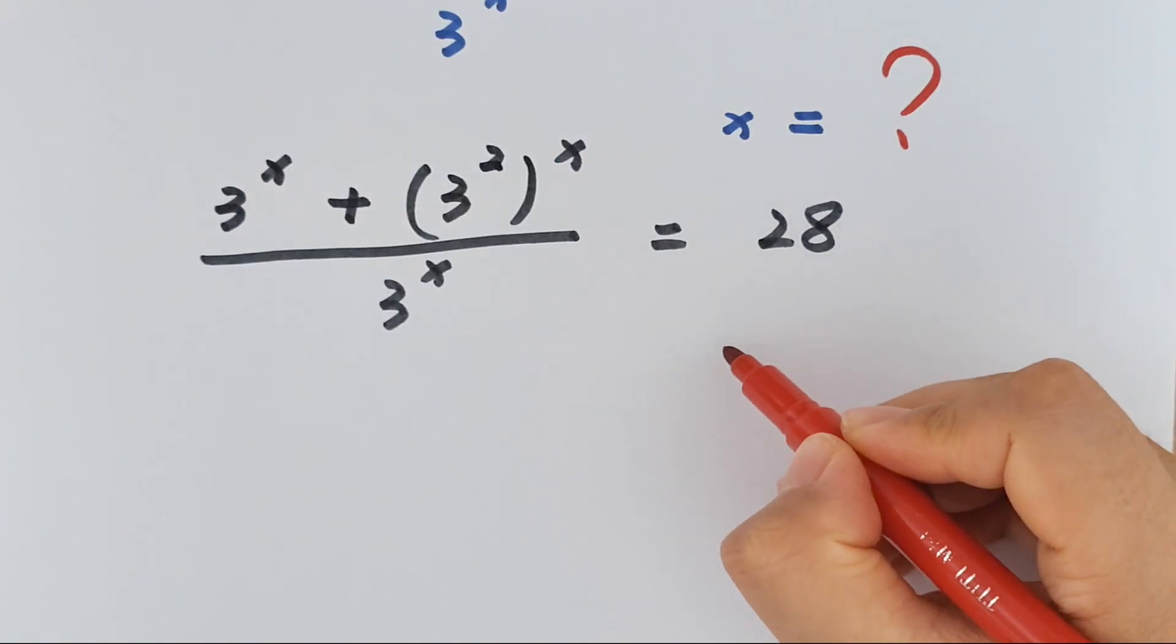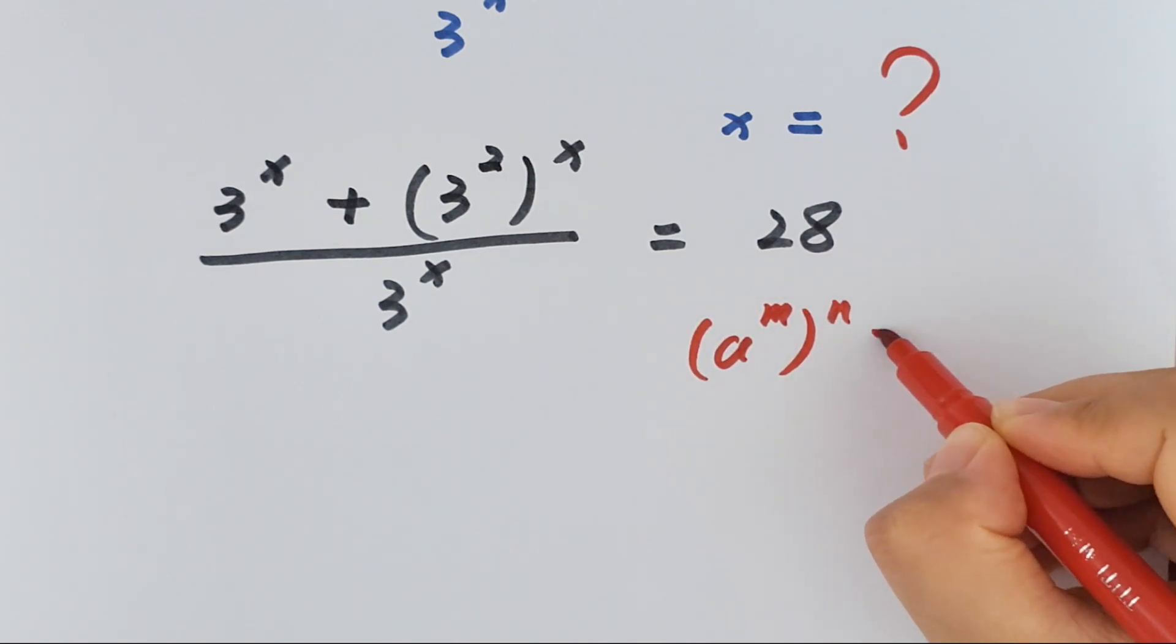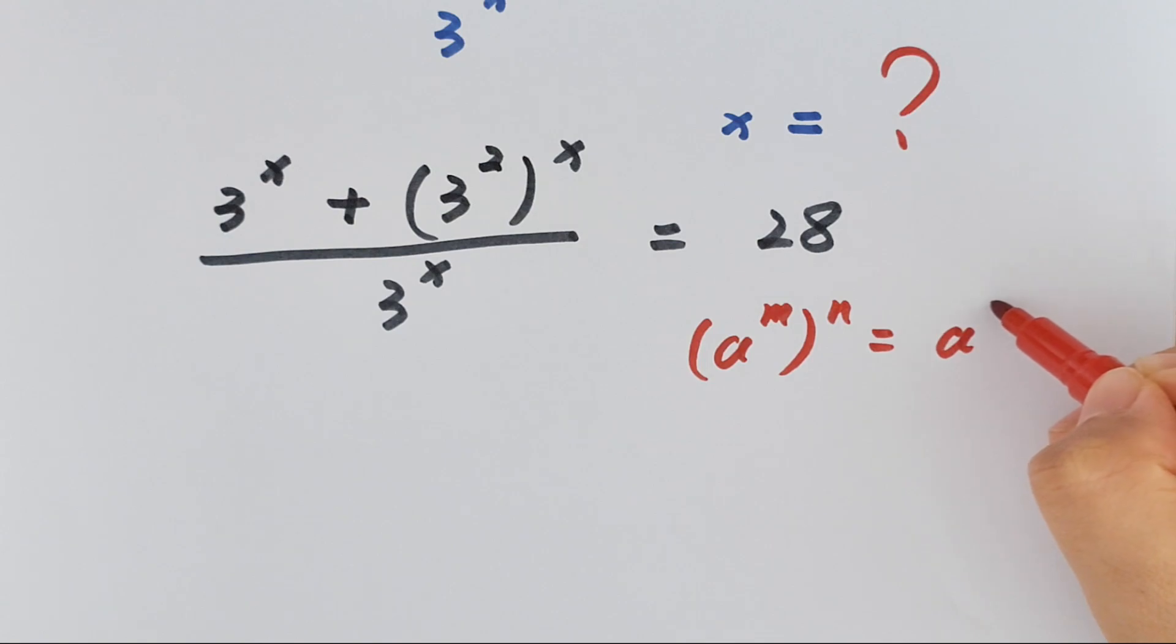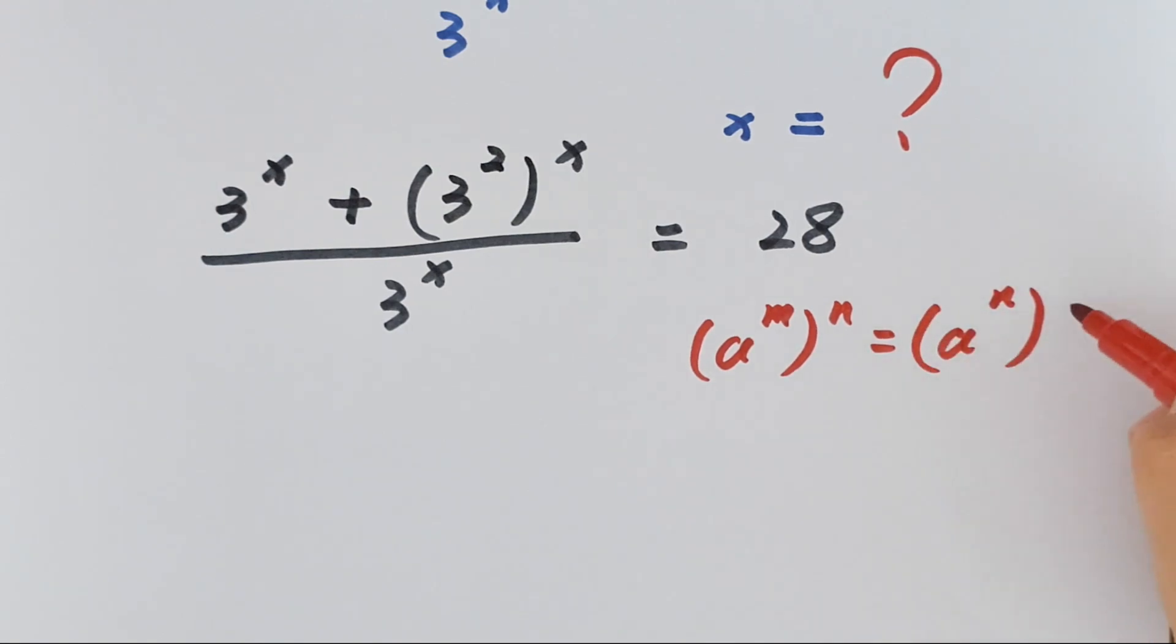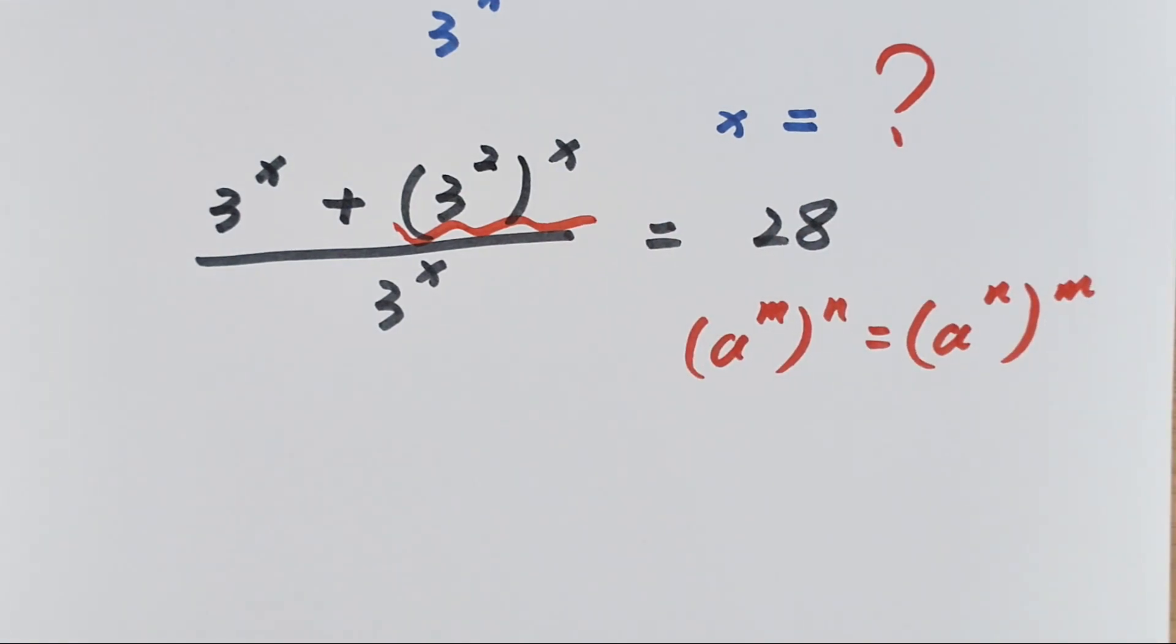Then we know a to the power of m bracket to the power of n equals a to the power of n bracket to the power of m. So here we can change the position.